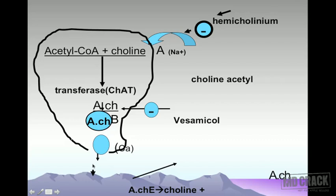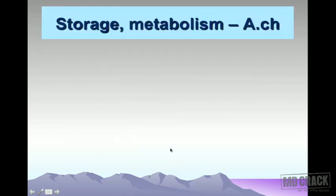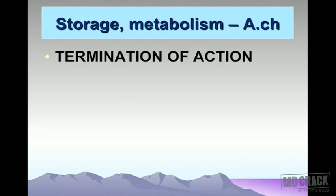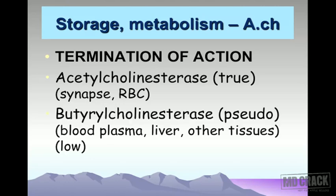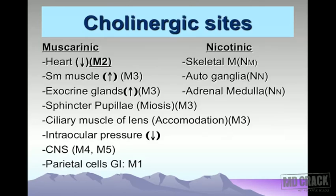Under the influence of calcium, acetylcholine is released. The released acetylcholine acts on the cholinergic receptors and is later broken down by the enzyme acetylcholinesterase. Cholinergic receptor sites are divided into muscarinic sites and nicotinic sites.